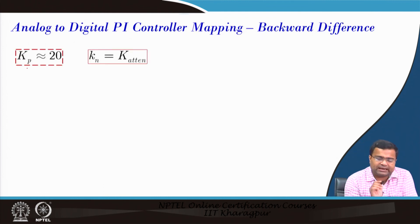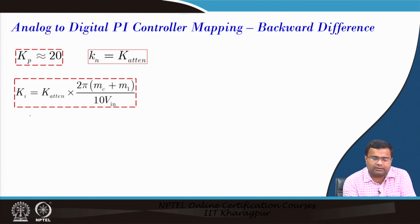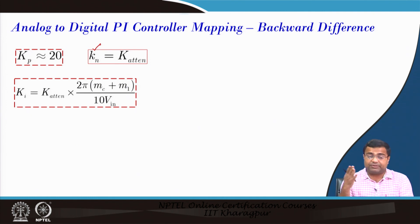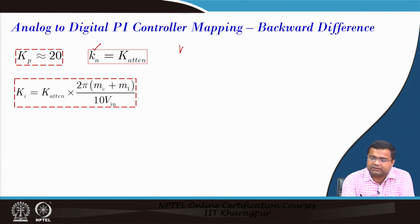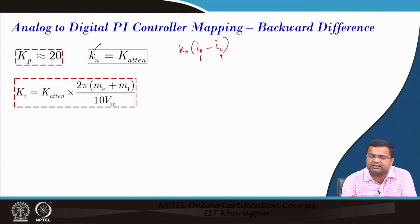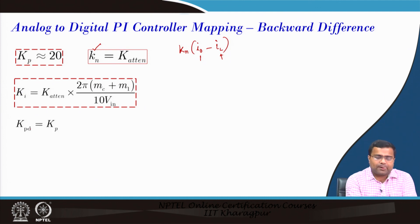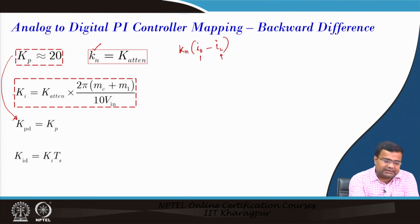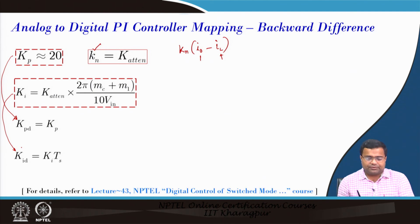To summarize: find the attenuation factor as (desired Kp limit) / (analytically calculated Kp), then scale Kp and Ki accordingly. The load feed-forward gain Kn corresponds to I0 minus IL — the actual inductor current and load current are in the same scale. For discrete-time implementation, the discrete-time Kp is the same as continuous-time, and the discrete-time Ki equals the continuous-time Ki multiplied by the sampling time. This conversion method is discussed in lecture 43.